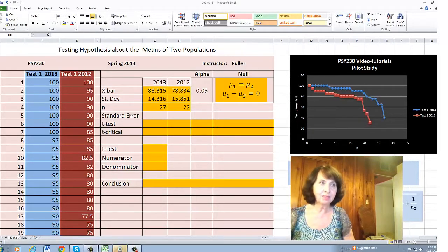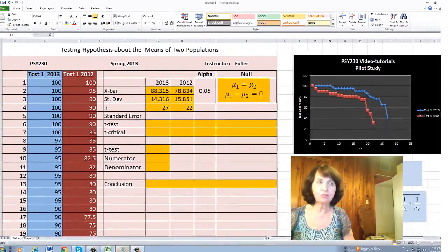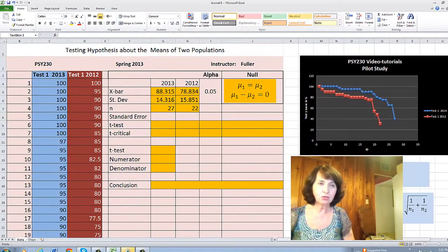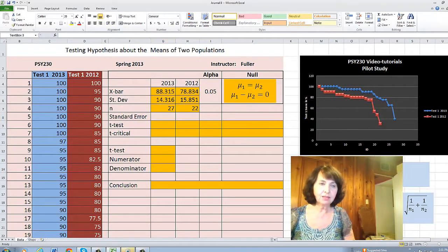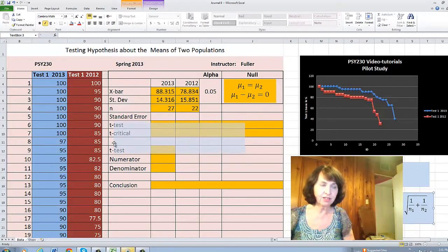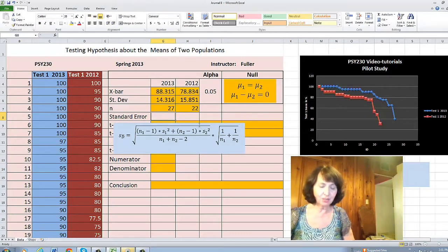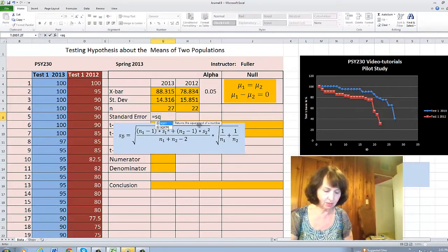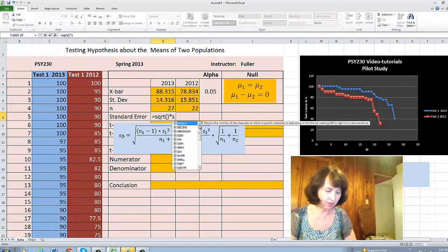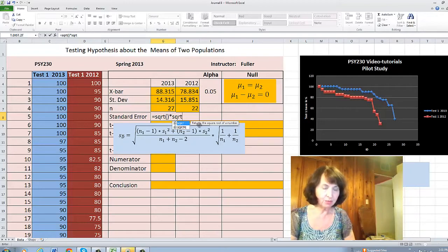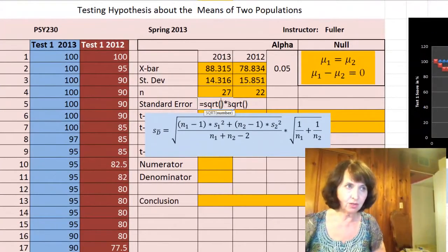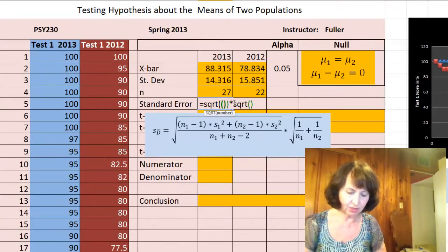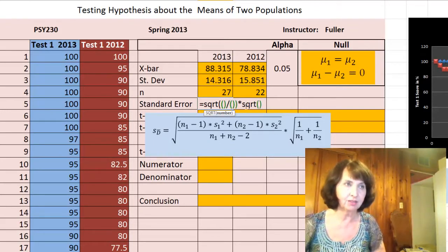Next step in testing hypothesis about the means of two populations is to calculate the standard error. This is the formula of the standard error, and although this formula looks very hard and long, I will show you how to scaffold it. SQRT times SQRT. So we multiply two square roots. The first square root should be scaffold as a fraction, so I have numerator and denominator.